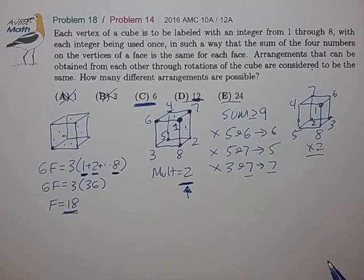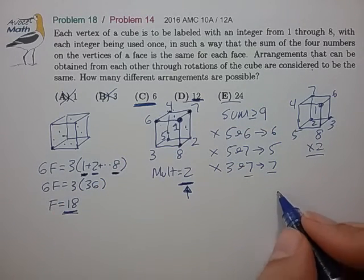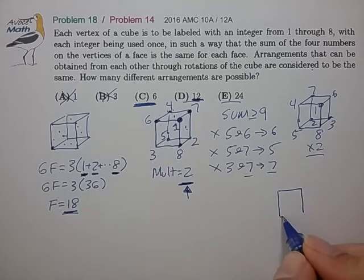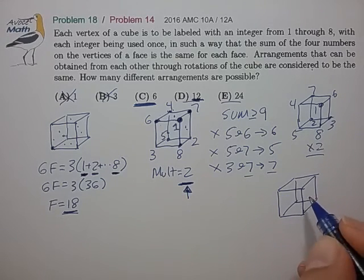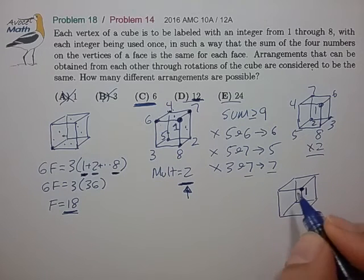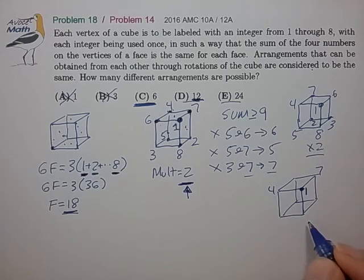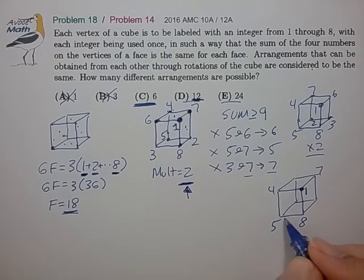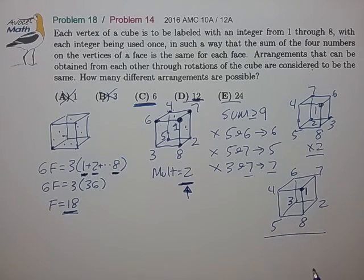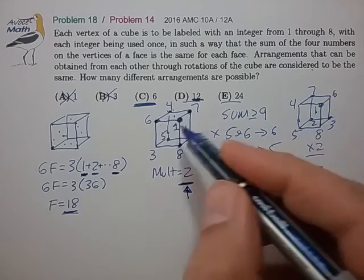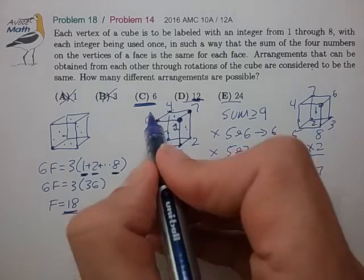And if you work this problem a little further, you'll find that there is one additional solution. And that is with the one anchor point and 4, 7, 8, and that dictates 5, 6, 2, and 3 in the back. And that's the only remaining solution. So that's 1, 2, 3 times 2, which is 6.